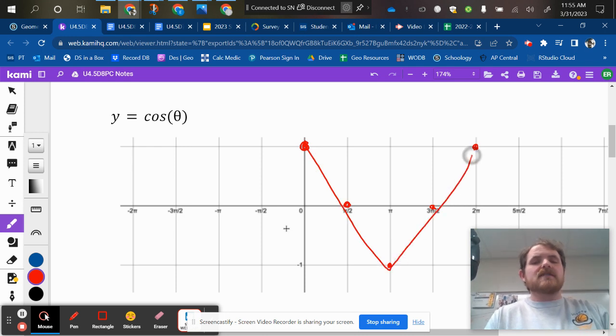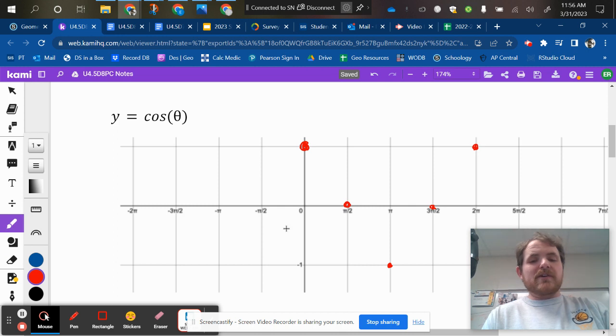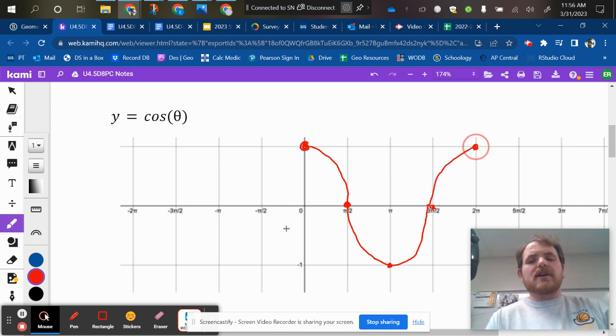Again, it is not a V, right? It is a wave. Cosine's a little bit more confusing because it's half of a hill to start, then a full valley, but then that hill gets completed over there, so you've got your full period, all right?